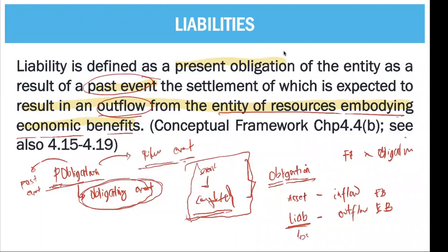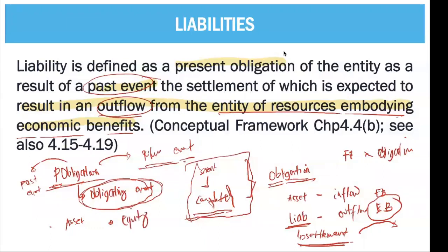Generally, you need to settle the liability, and since there is a settlement, it means there is an outflow of economic benefits. We actually settle your liability by paying it off through an asset or by issuing equity. If the settlement is through an asset, you debit your liability and credit the asset. If the settlement is equity, you debit your liability and credit shareholders' equity.